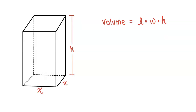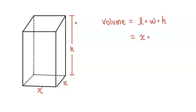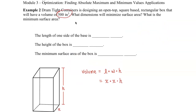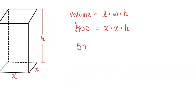The length and width are both x, so we get x times x times height — imagine stacking that square base h times. The volume equals x squared times h. They gave us that volume is 500, so 500 = x²h. Solving for h by dividing both sides by x², we get h = 500/x².